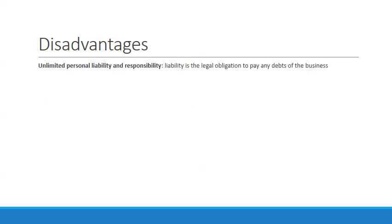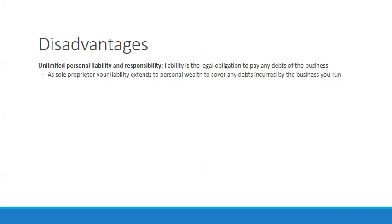There are significant disadvantages. You have unlimited personal liability and responsibility. Liability is a legal obligation to pay any debts of the business. As a sole proprietor, you are responsible for 100% of the costs and debts. Your liability extends to your personal wealth to cover any business debts — that is a massive difference compared to how corporations are run.